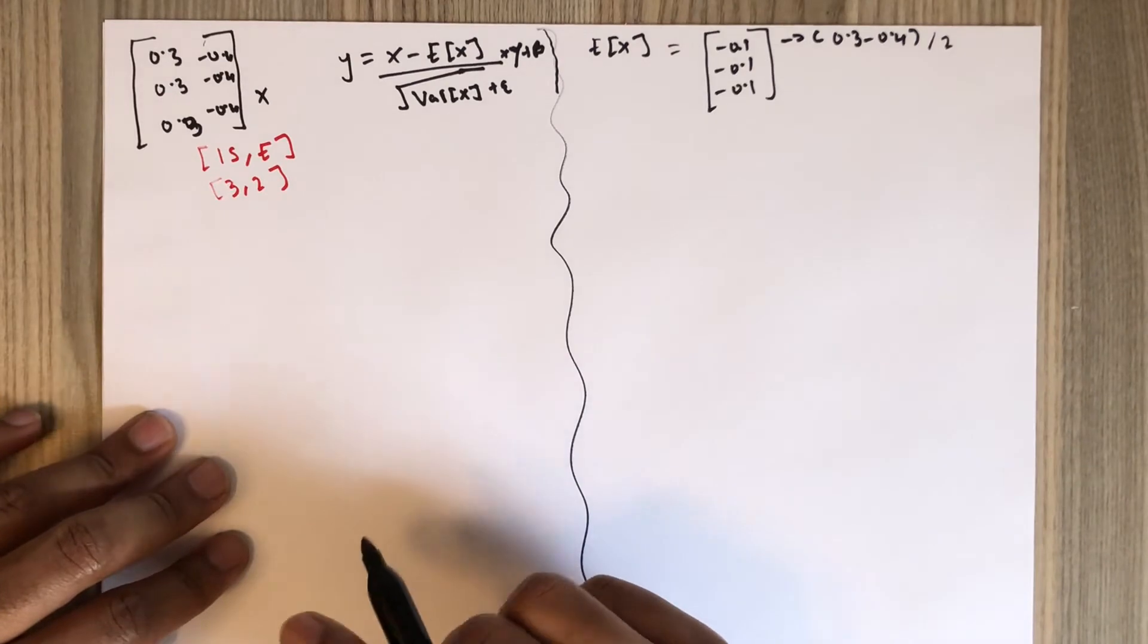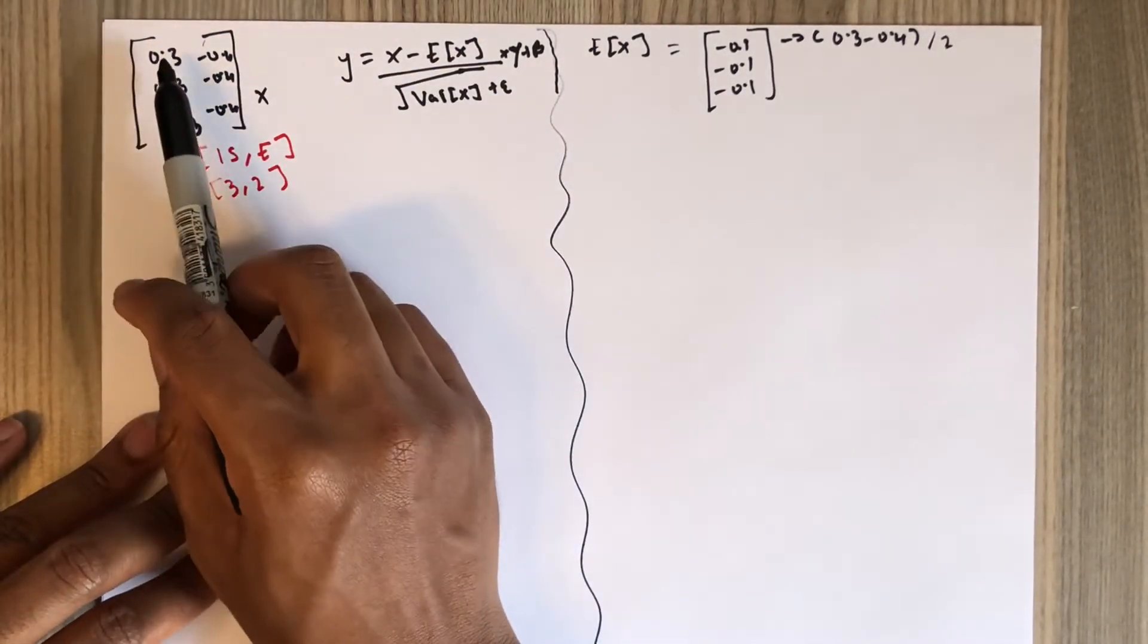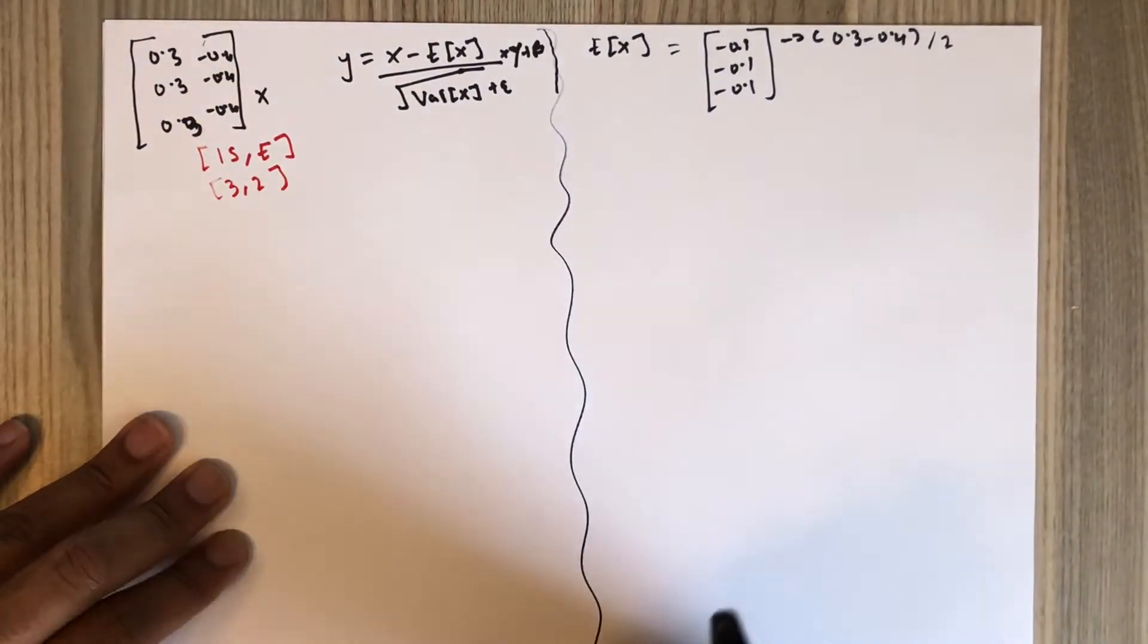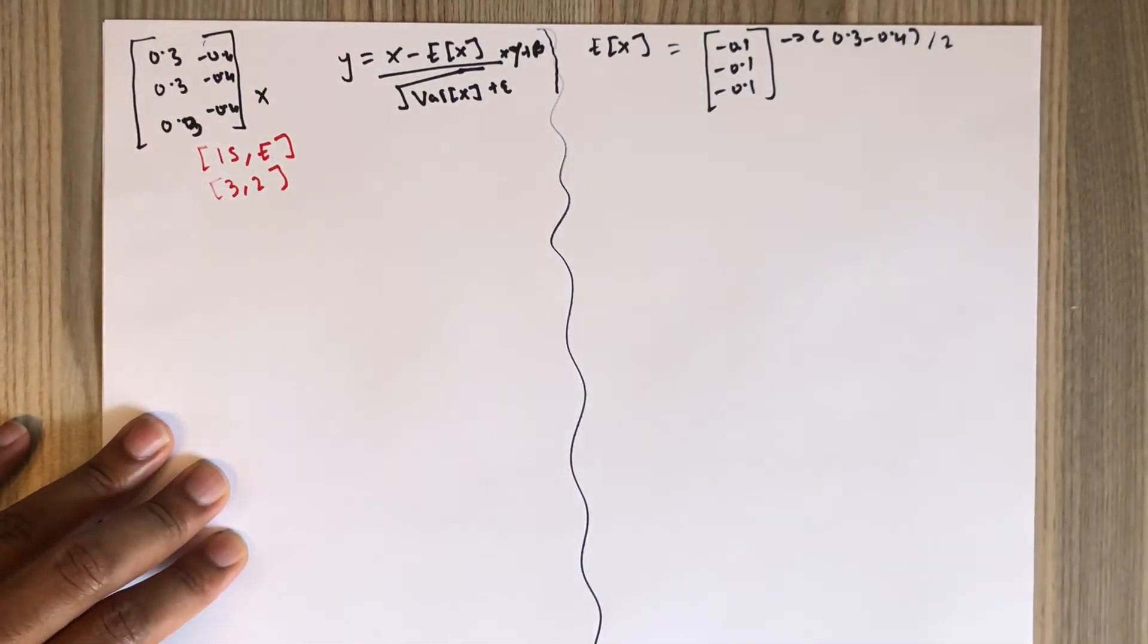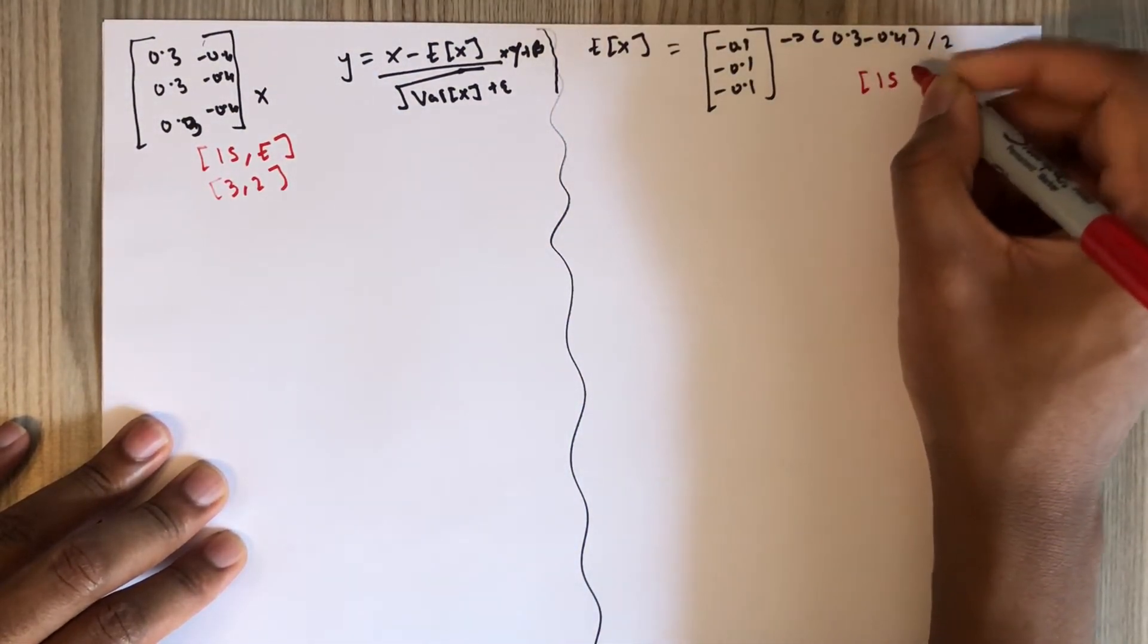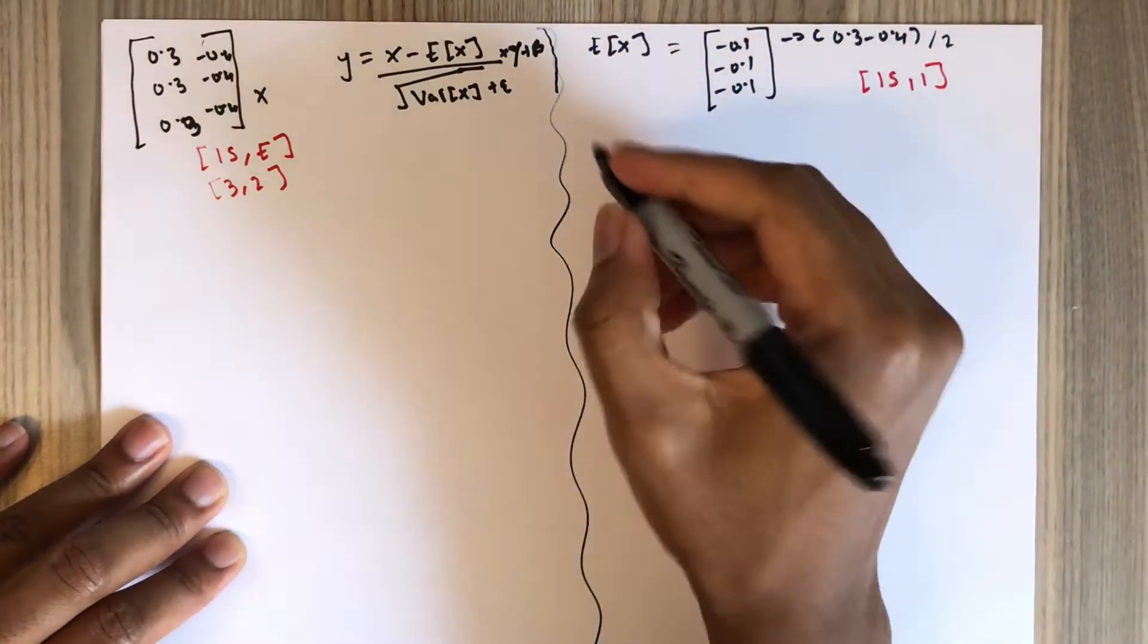Unlike in batch normalization where the mean is calculated across IS, this is calculated across E for each training example. The output of the expected value has a dimension of IS by 1.